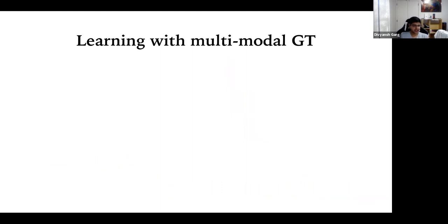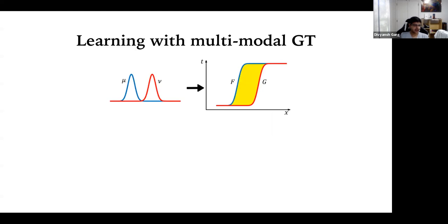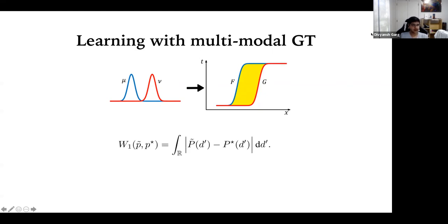Another nice thing about Wasserstein distances is that they work for arbitrary distributions. Even if your ground truth is multimodal, we can easily calculate the Wasserstein distance between 1D distributions. For two distributions mu and nu, the Wasserstein distance is the area between their cumulative distribution functions (CDFs): F is the CDF of mu, G is the CDF of nu, and the distance is just the area between the two curves.